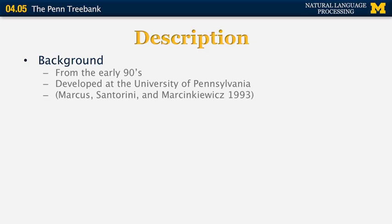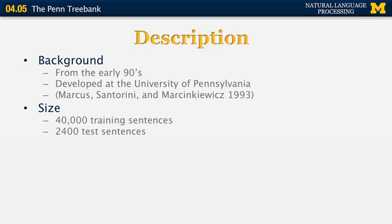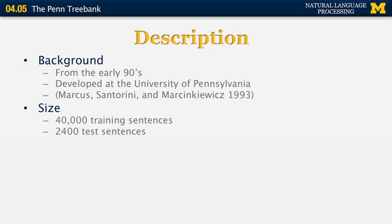The most cited paper is by Mitch Marcus, Beatrice Santorini, and Marianne Marcinkiewicz from 1993. The size of the Penn Treebank is not that large — it has about 40,000 training sentences processed by hand and 2,400 test sentences. If you train a parser on the Penn Treebank, you should never look at the test data until your parser is fully developed. The genre of text included is mostly Wall Street Journal news stories and also some spoken conversations.